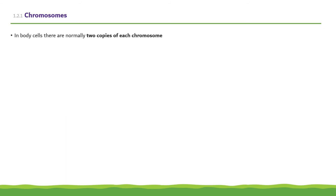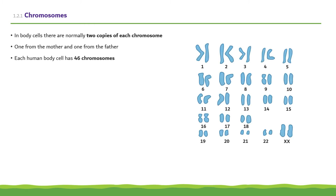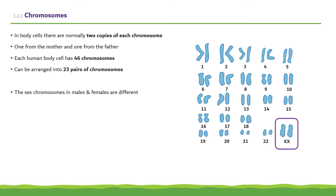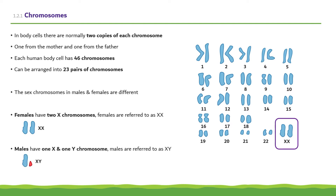In body cells, there are normally two copies of each chromosome, one from the mother and one from the father. Each human body cell has 46 chromosomes, which can be arranged into 23 pairs. The sex chromosomes in males and females are different. Females have two X chromosomes, with females being referred to as XX. And males have one X chromosome and one Y chromosome, with males being referred to as XY.